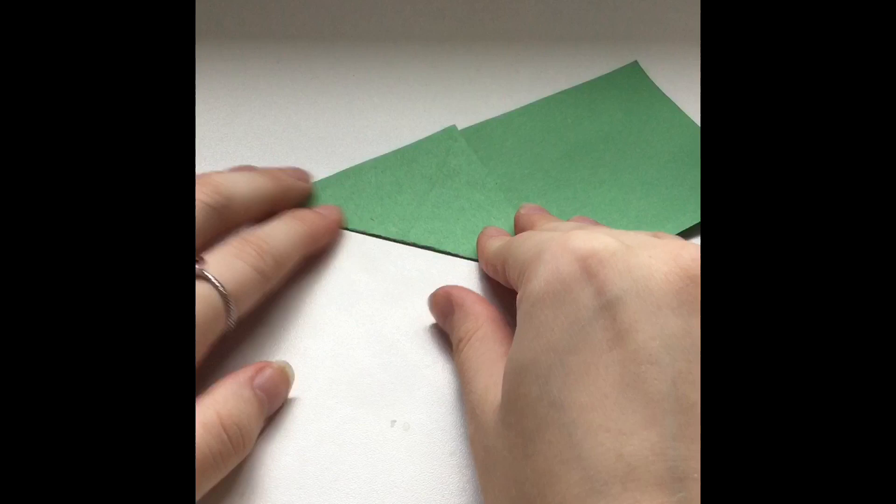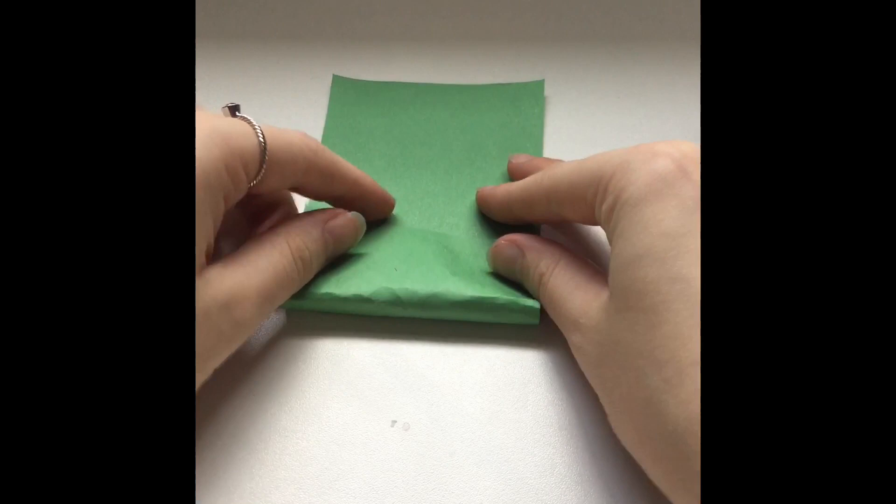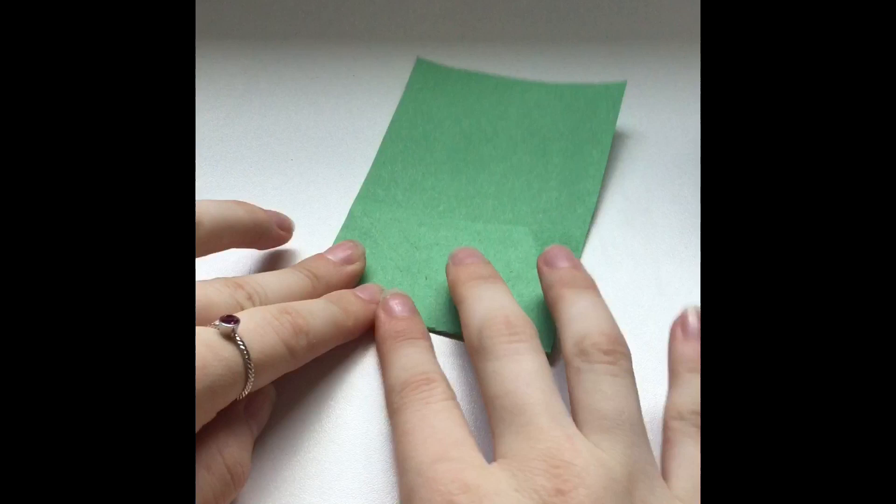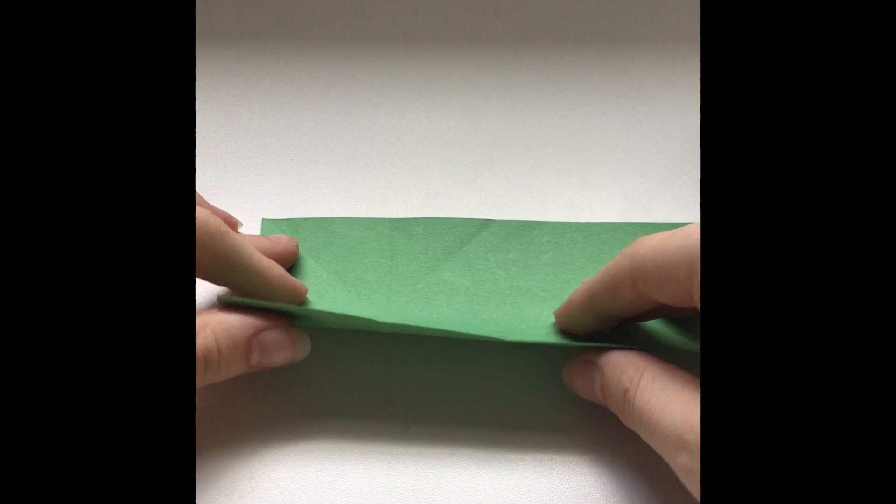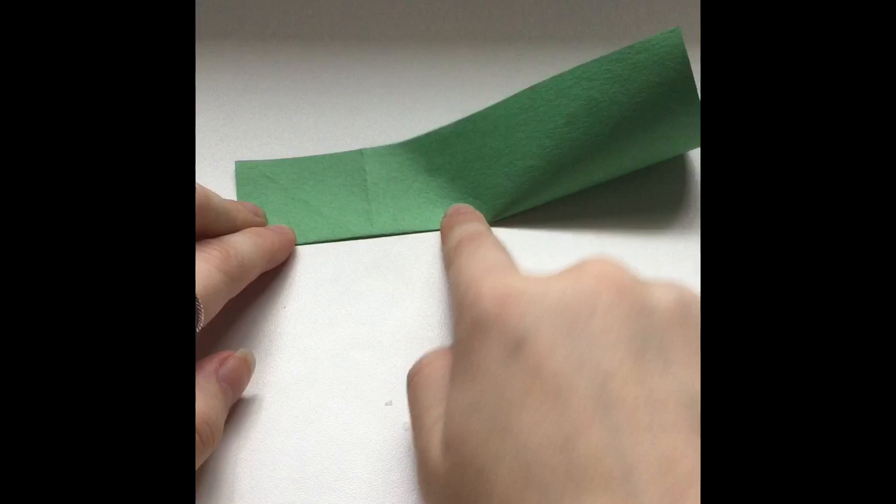Once you do that you are going to take this part here and fold it towards the center of the rectangle. And then you are going to do one more fold which is just folding this hot dog style if you would call it. But you have to make sure you only fold it to half of the rectangle because this part you use it later.